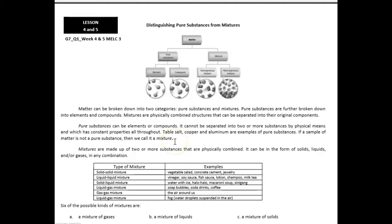Mag-review muna tayo. Last week, we learned that elements are made up of only one type of atom. It is a substance that cannot be broken down into any other substance. When you take a sample of that element or divide it into pieces, it still has the same chemical composition. And when we say compound, it is a substance form when two or more elements are chemically joined.